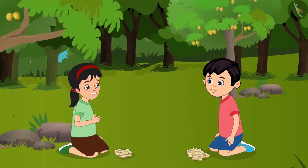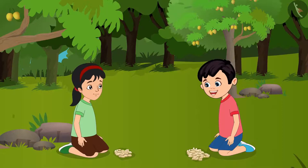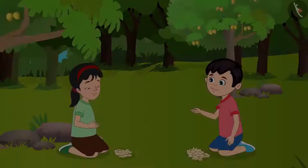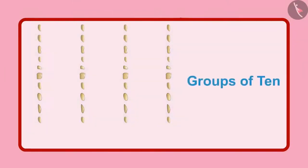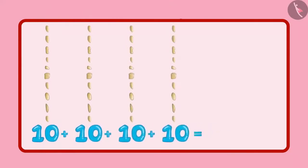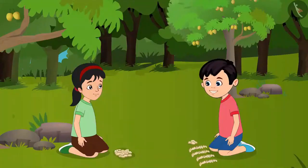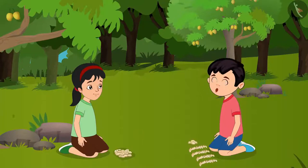Pinky asks Chotu how many stones he has collected. Chotu says, 'Wait Pinky, let me count and tell you. But these are so many stones — how should I count them?' Pinky advises: 'First of all, keep them in groups of 10 each, and then tell me how many groups of 10 you have.' Chotu counts: 'Pinky, I have 4 groups of 10 each.' Pinky says, '4 groups of 10 means you have a total of 40 stones.' Chotu notices: 'Pinky, look here — there are 5 other stones too. We have not counted them.'